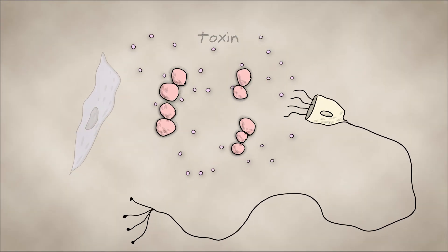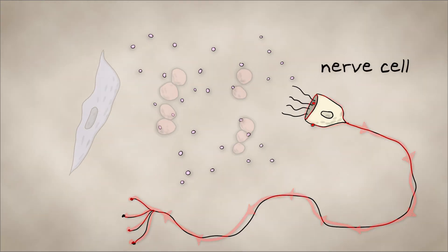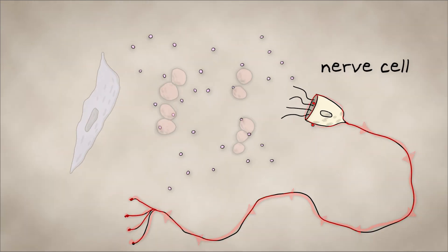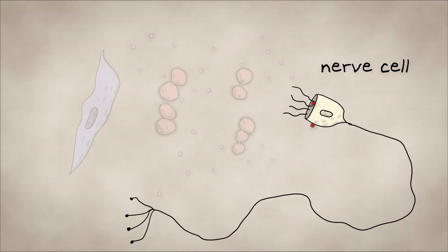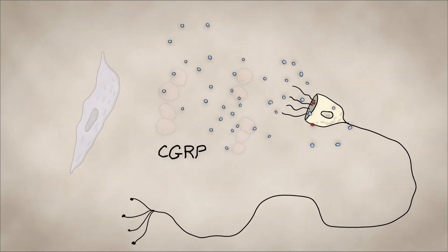The toxin activates nearby nerve cells, causing the intense headache typical of meningitis. The toxin then prompts the nerve cells to release a chemical called CGRP.